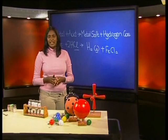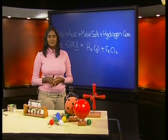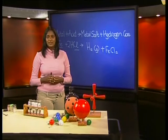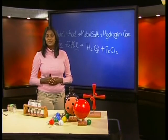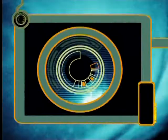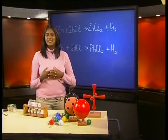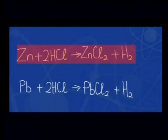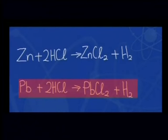We also saw reactions between lead and zinc with hydrochloric acid. If I told you that all the metals form ions with a charge of 2+, could you write these equations on your own? Write the balanced equations for zinc and hydrochloric acid, and lead and hydrochloric acid. Here are the completed balanced chemical equations — compare yours to mine. Zinc plus hydrochloric acid will give you zinc chloride plus hydrogen gas. Lead plus hydrochloric acid will give you lead chloride plus hydrogen gas.